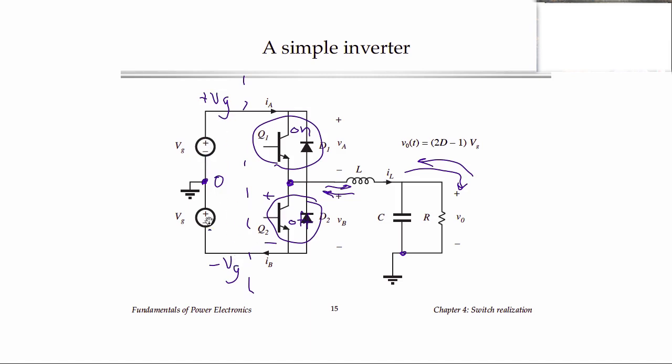And since our DC input voltage doesn't change polarity, we only have to block positive voltages with this switch. So a current bidirectional two-quadrant switch will work. And in fact, current bidirectional two-quadrant switches are commonly used in inverter applications.